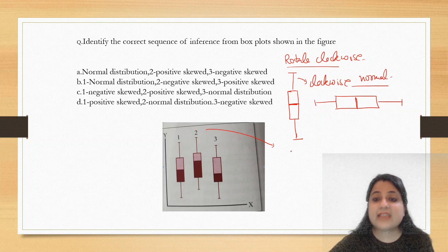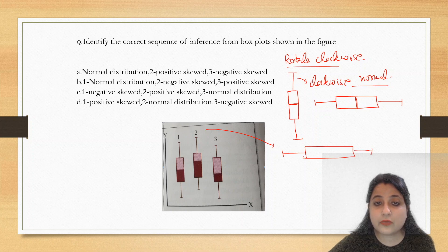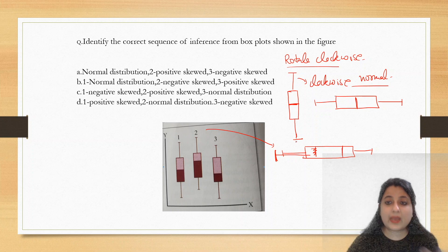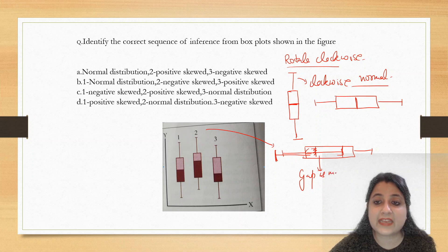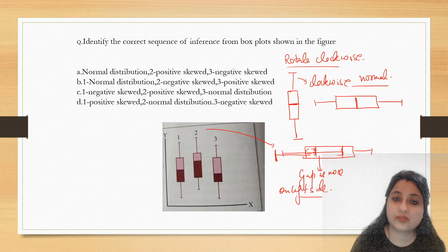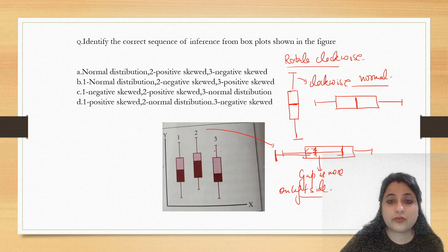Now look at second one. If you rotate the second one, all you have to do is rotate it. If you rotate it clockwise, what do you see? Where are the outliers? Where are the outliers lying? If you rotate it clockwise, the outliers, the gap is more on left side. Since gap is more on left side, it is negative sided skewness.